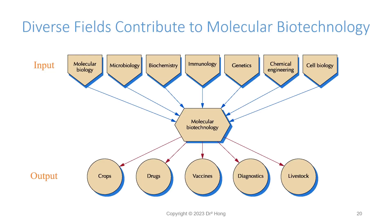Modern molecular biotechnology is a combination of different fields. It requires knowledge from molecular biology, microbiology, biochemistry, immunology, genetics, chemical engineering, and cell biology — all put into one melting pot. The output of biotechnology has the potential to enhance crop yield and disease resistance, produce new drugs and vaccines, and be applied in diagnostics as well as enhancing our livestock.